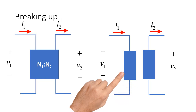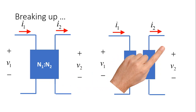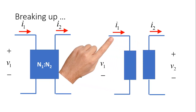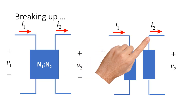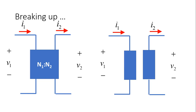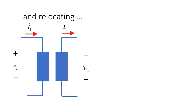Observe: when the top of the left port is positive, the top of the right port is positive. When the current enters the top of the left port, the current is leaving the top of the right port. If we connect them somewhere else, how do we know which side is the top of each of those two? We call the sides — the ports — windings or coils. We speak of the primary coil or primary winding and the secondary coil or secondary winding.